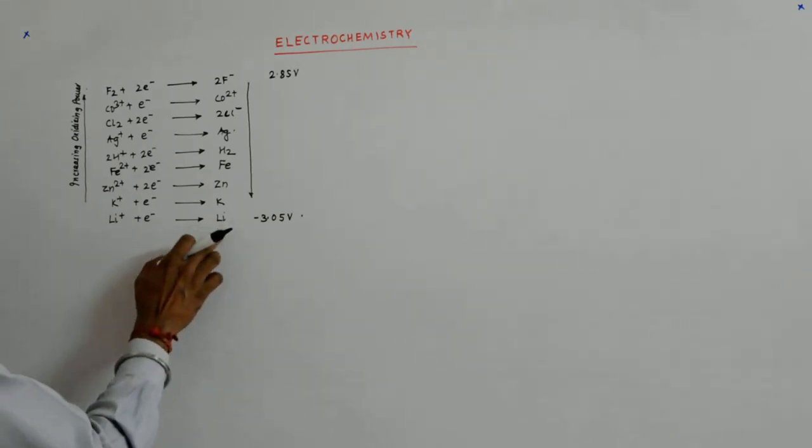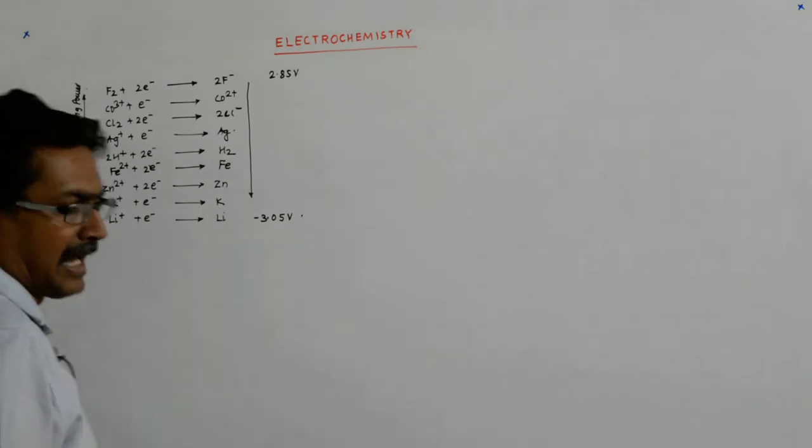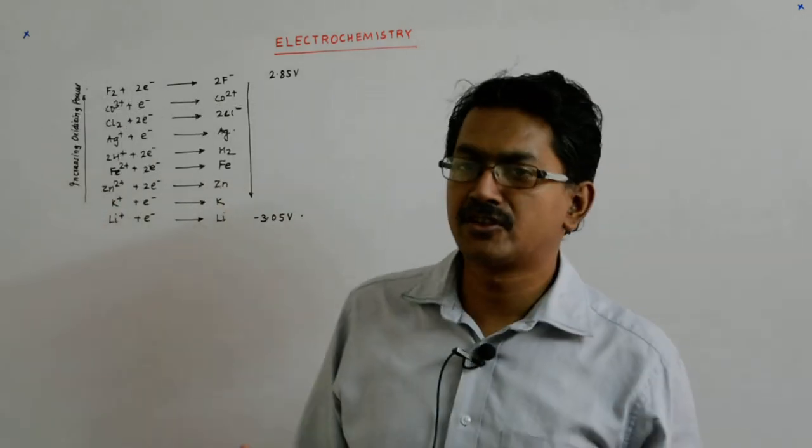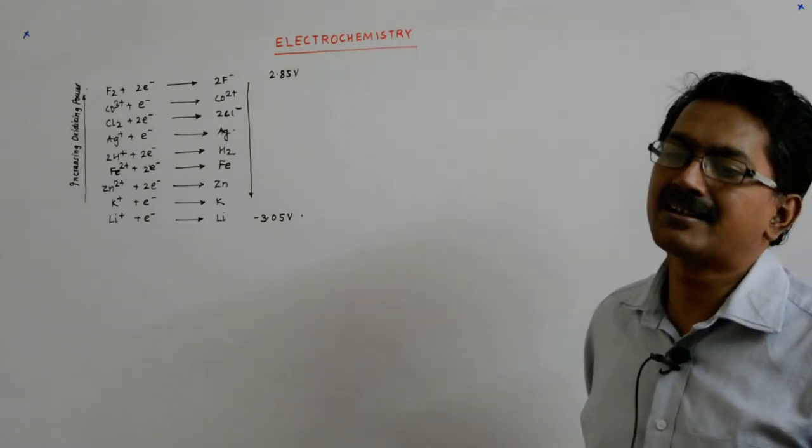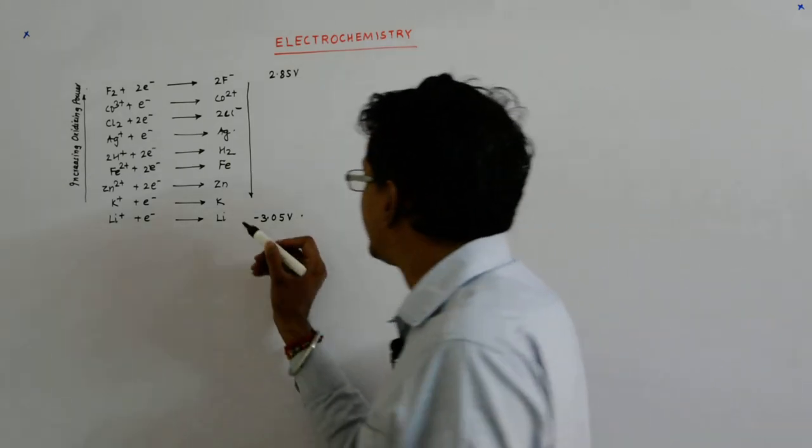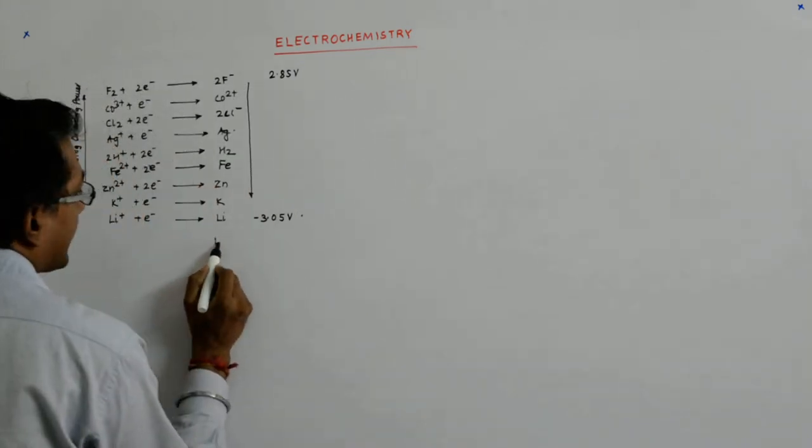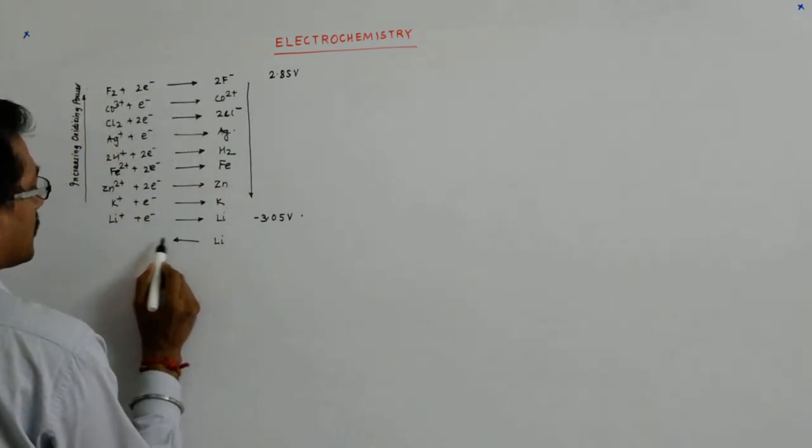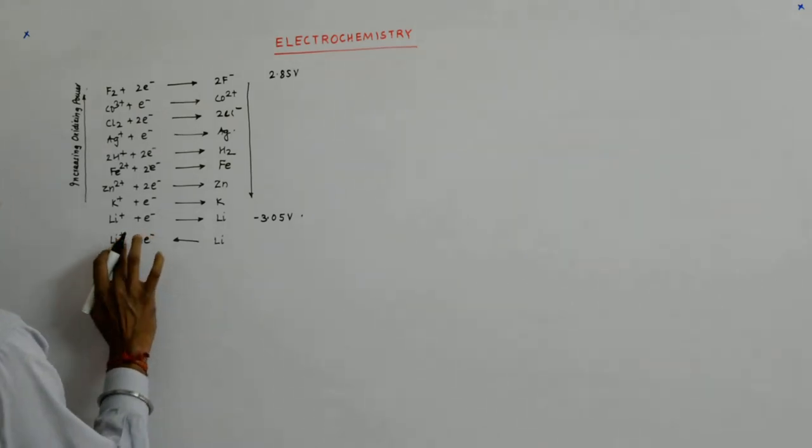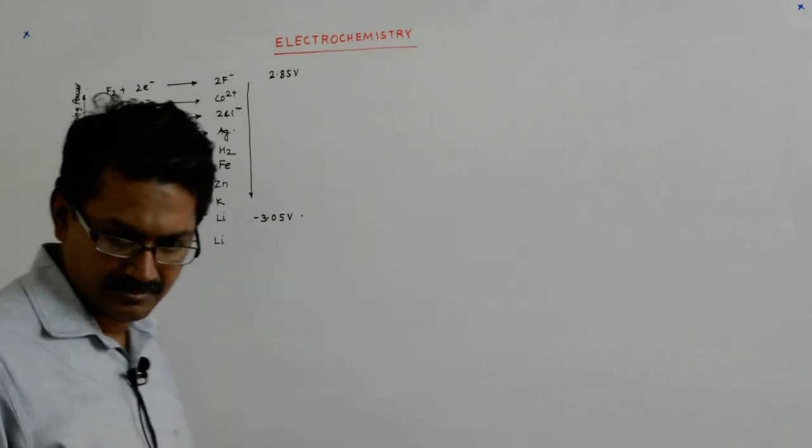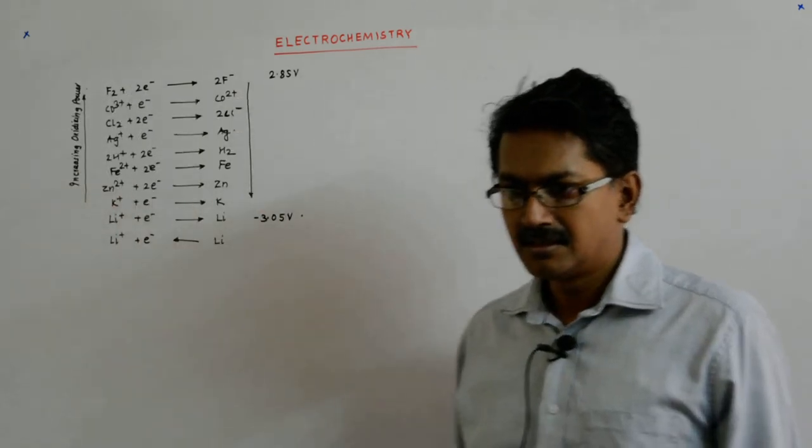They, for example, lithium having the least tendency to get reduced has the highest tendency to get oxidized. That means this reaction that Li gives you Li plus plus an electron is highly favored. This is highly favored.